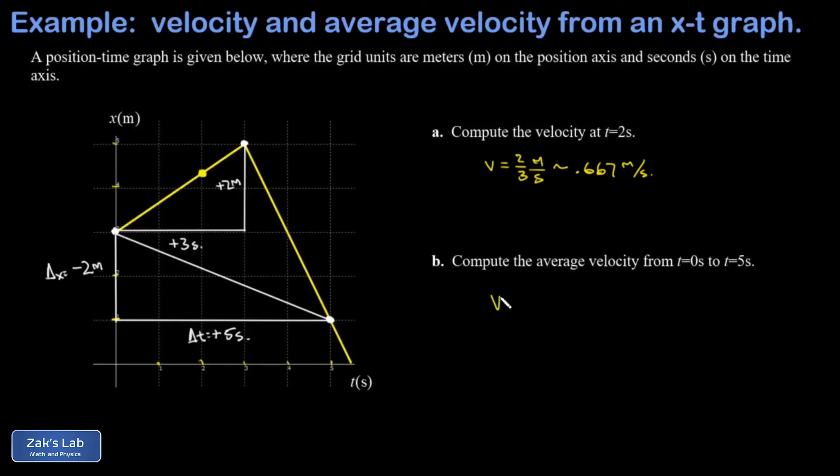And my average velocity can be written as delta x over delta t. And that's a negative two meters over five seconds. And I get negative 0.4 meters per second on average over that five-second time interval.